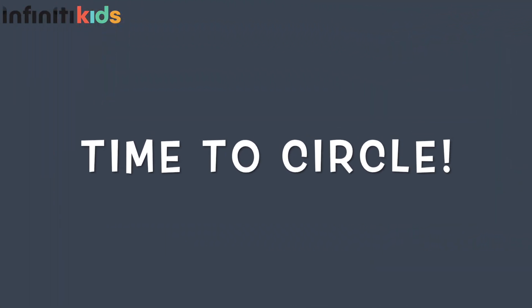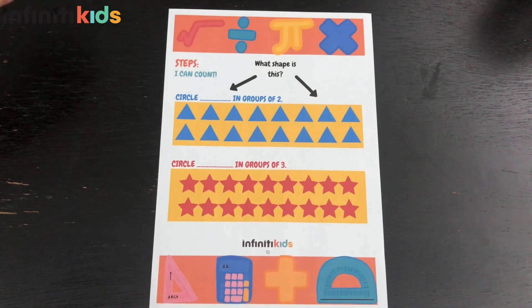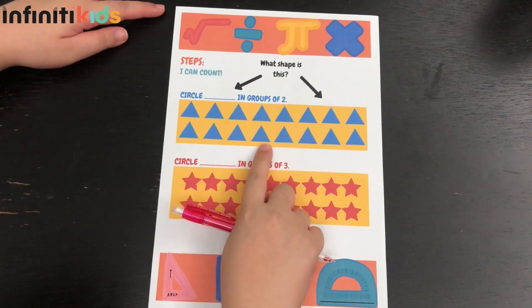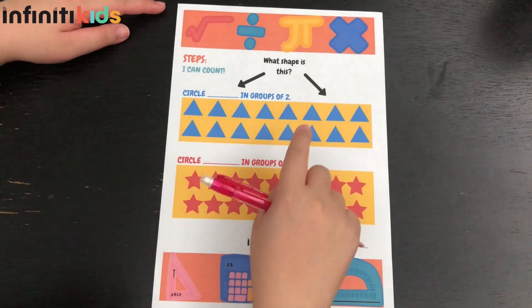Now let's move on to circling. For the first yellow box, we have to circle in groups of two.